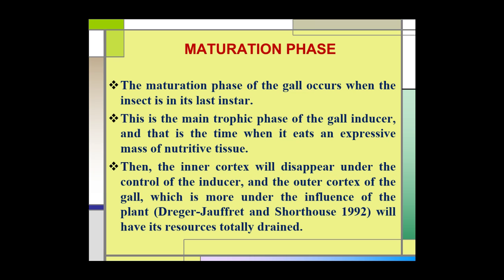The third phase is the maturation phase. In this phase, maturation of the gall occurs when the insect is in its last instar. This is the main trophic phase of the gall inducer, when it consumes an extensive mass of nutritive tissue. The inner cortex then disappears under the control of the inducer, and the outer cortex of the gall, which is more under the influence of the plant, will have its resources totally drained.